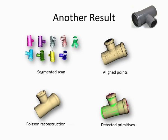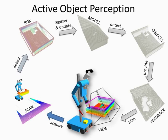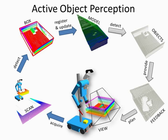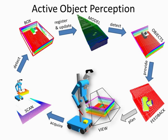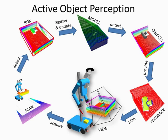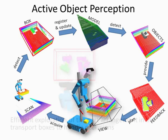Here is another result of our method. In a newly acquired scan, we first detect the transport box, then register the scan and update the so-far built model. We detect objects and provide feedback for focusing view planning to interesting regions. We then navigate to the planned sensor pose and acquire a new scan.